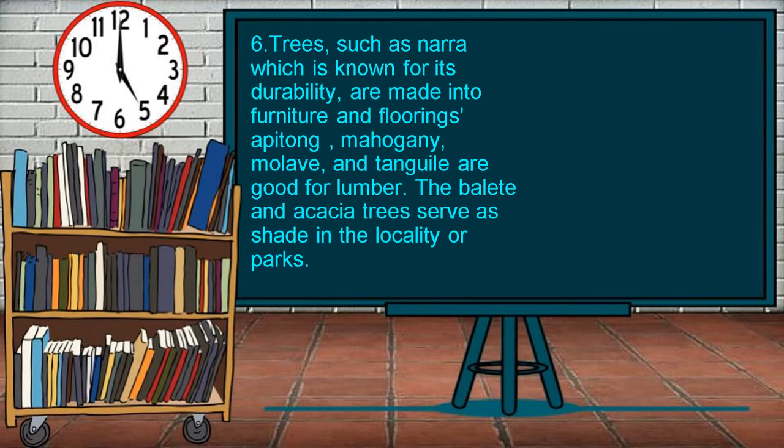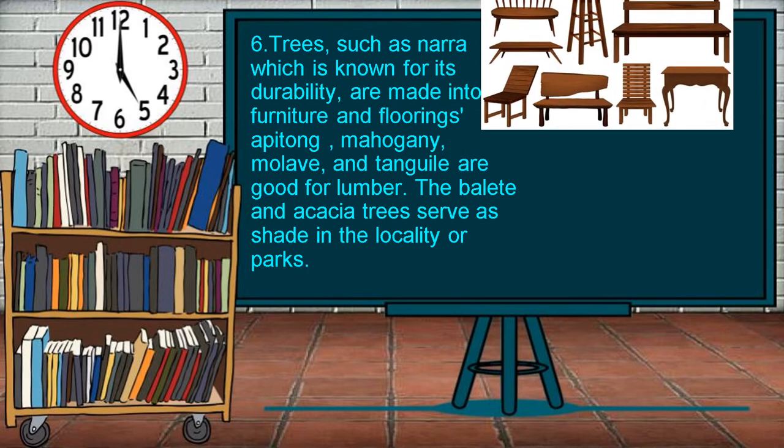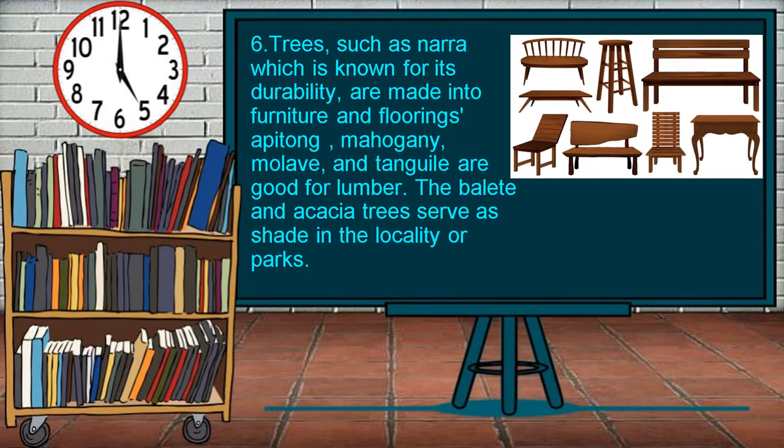Lastly, trees such as nara, which is known for its durability, are made into furniture and floorings. The apitong, mahogany, mulave, and tanggal are good for lumber. The balete and the casha trees serve as shade in the locality or parks.